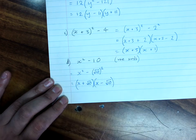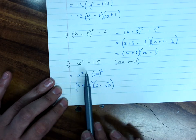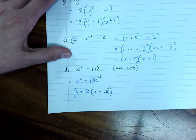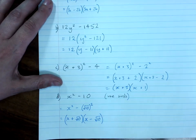1 is plus, 1 is minus. So, that's using surds to factorize a difference of perfect squares. And we'll look at factorizing by grouping in the next video.